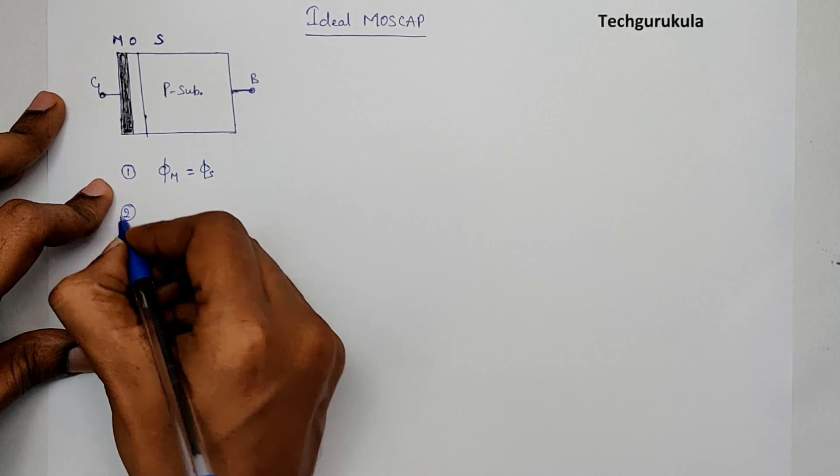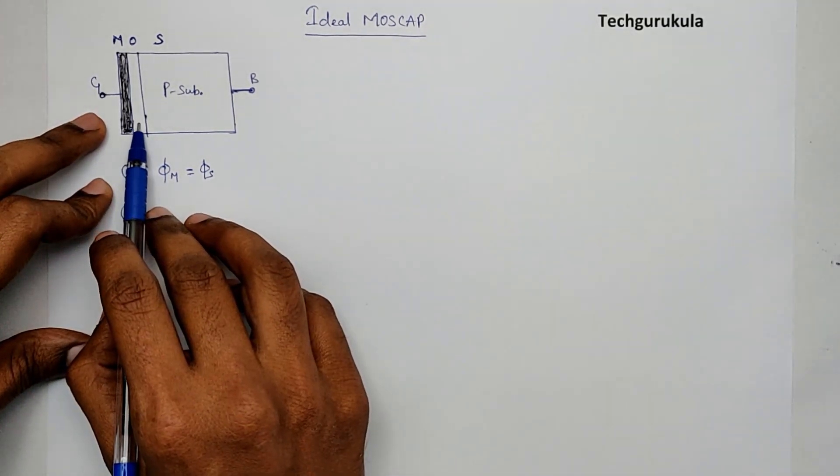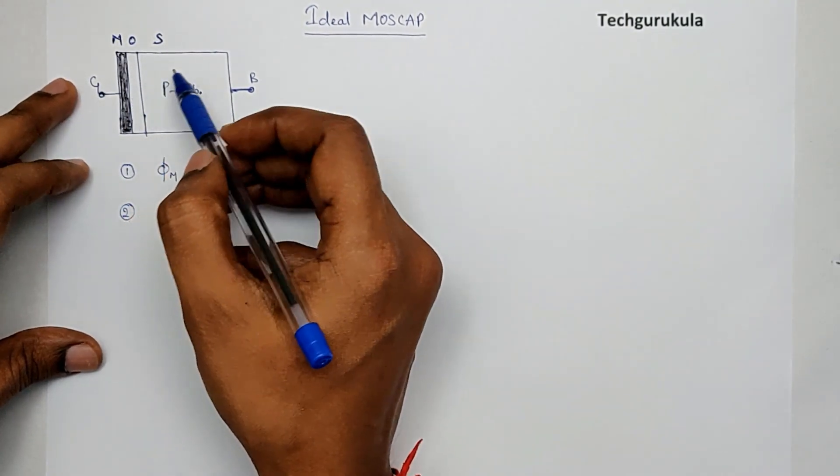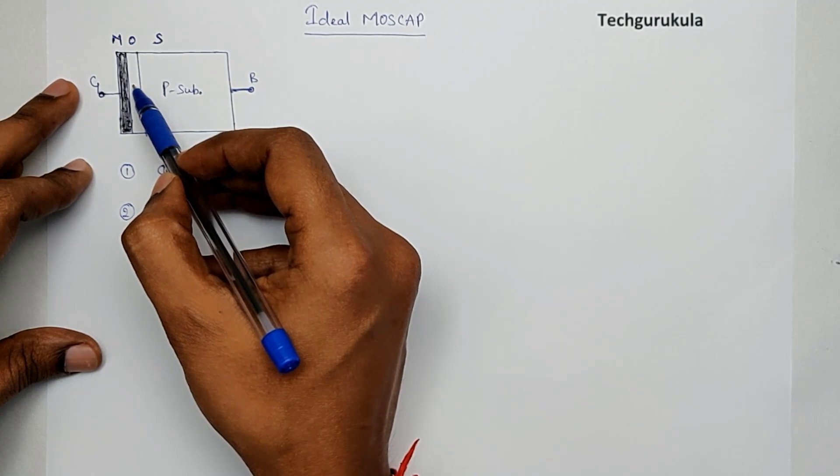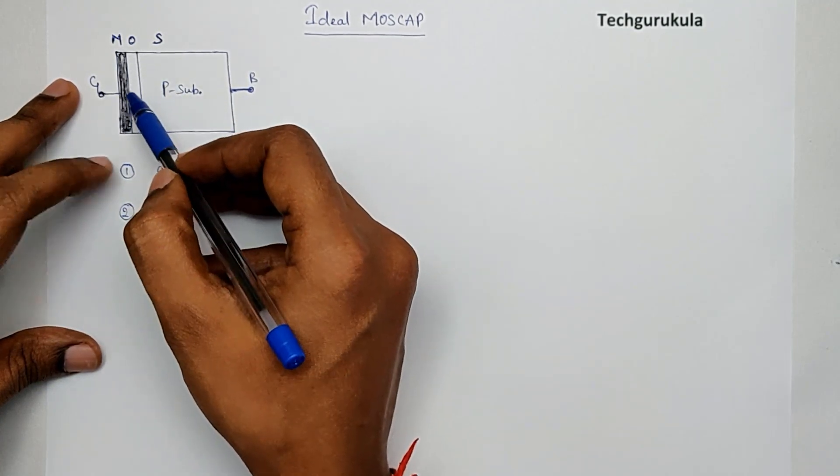And second, we're going to make that the oxide has no charges inside, which means oxide is an insulator. If you actually put some charges which will get trapped, they cannot move because it's an insulator. The charges cannot move.